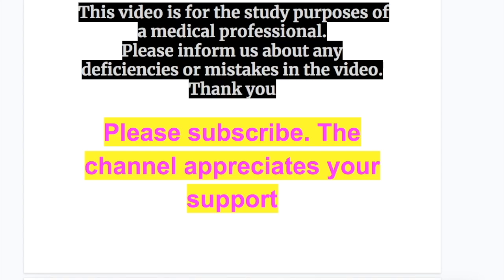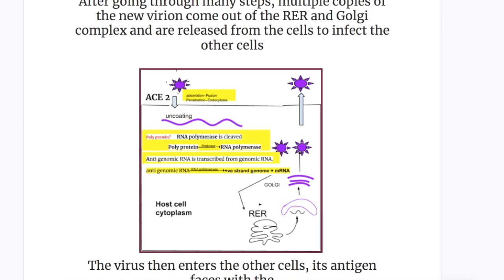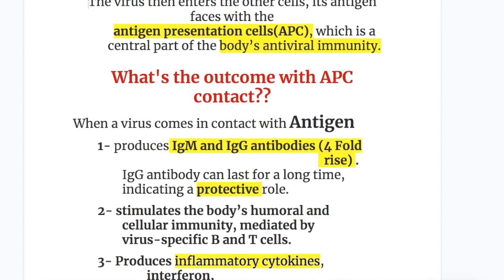In this video, we will discuss the cytokine storm that occurs in COVID-19 and is the main cause of the signs and symptoms. After going through many steps, multiple copies of the new virion come out of the rough endoplasmic reticulum and Golgi complex and are released from the cell to infect the other cells. The virus then enters the other cells, and its antigen faces antigen-presenting cells (APC), which is a central part of the body's antiviral immunity.